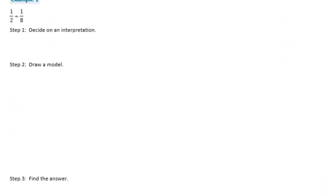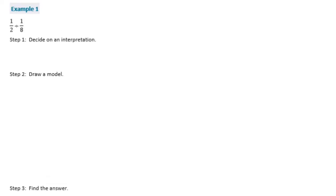Example 1. 1 half divided by 1 eighth. Step 1. Decide on an interpretation. So maybe you talked about this in class. But we're going to use the measurement interpretation versus partitive, which we'll talk about in the next lesson.